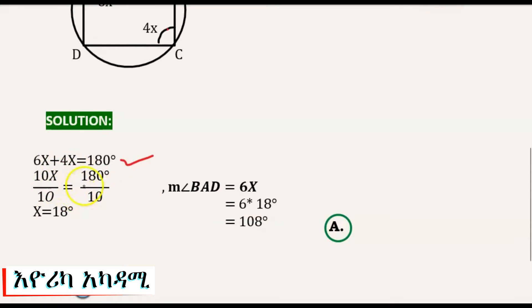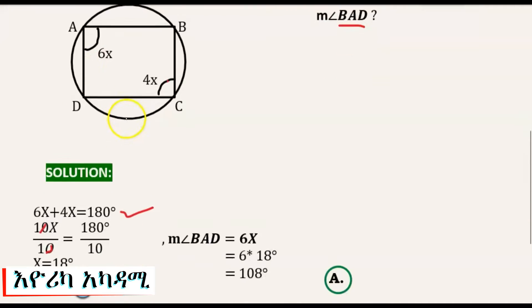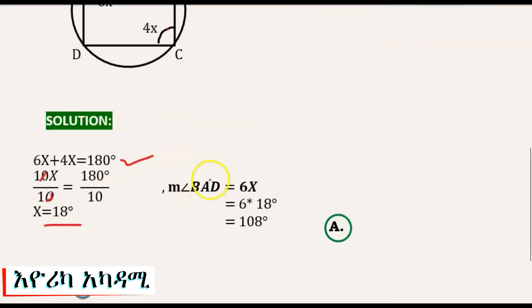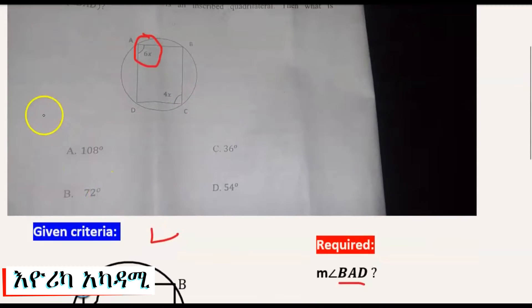The measure of angle BAD: angle BAD in the middle is 6x. So the measure of angle BAD equals 180 minus 6x. Then 6x equals 80 degrees. So our required answer will be 180 minus 80, which is the answer in degrees.